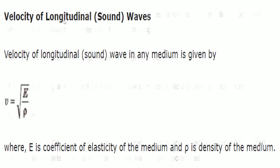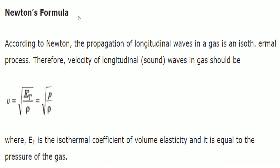The velocity of a longitudinal wave is given by V = √(E/ρ) in any medium, where E is the elasticity of the medium and ρ is the density. According to Newton, the propagation of longitudinal waves in gas is an isothermal process — temperature remains constant. So the velocity of sound in gas is V = √(E_T/ρ), where E_T is the isothermal coefficient of volume elasticity, which equals the pressure P of the gas.